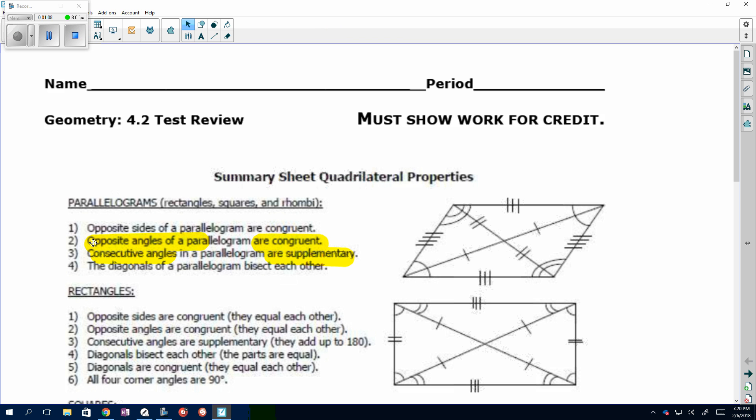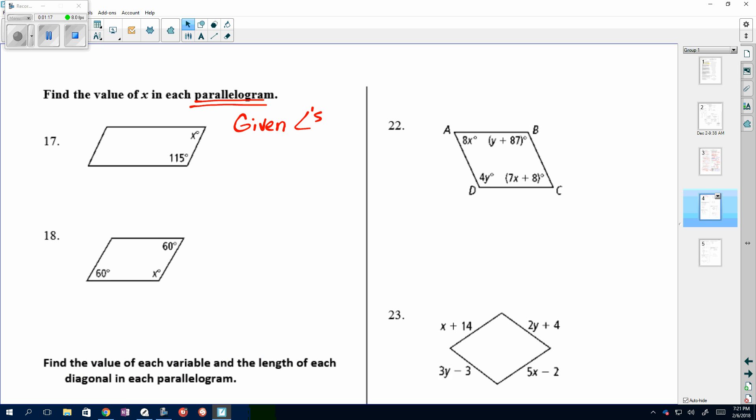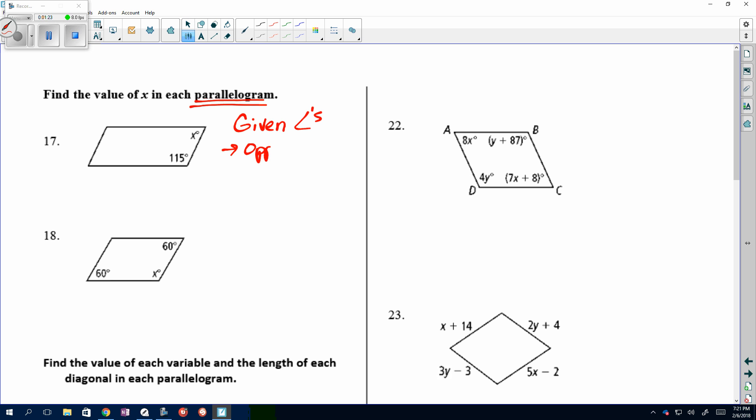So, I'm going to use those properties to help find what's missing. When I go, remember, we're doing, focusing using either opposite angles congruent, or, and we have consecutive angles, and I'm going to abbreviate that, supplementary. What does supplementary mean? Equals 180. Exactly.